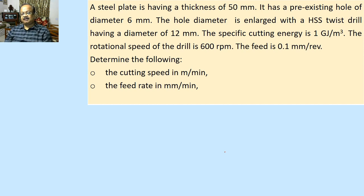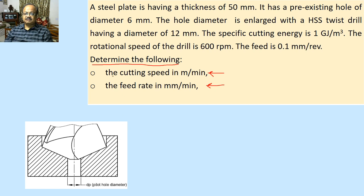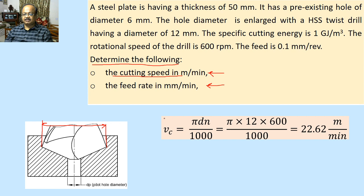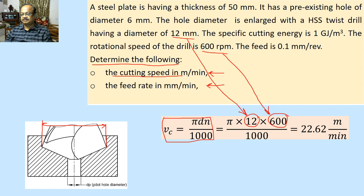I have kept the problem statement and given the solution for the first two things: cutting speed and feed rate. In drilling, cutting speed is calculated at the periphery — not at the center, but at the periphery. So cutting speed is calculated by Vc = πdn/1000, where d = 12 mm and n = 600 rpm are substituted. If you do the calculations correctly, you will get a cutting speed of 22.6 meters per minute.